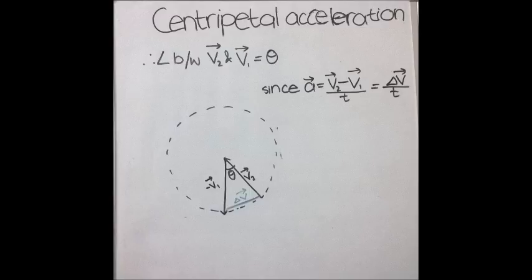Now, to calculate the centripetal acceleration, we need to look at a very small time interval where the velocity vectors are almost touching and the angle theta is extremely small. In such a case, we can say that delta V is equal to the arc.